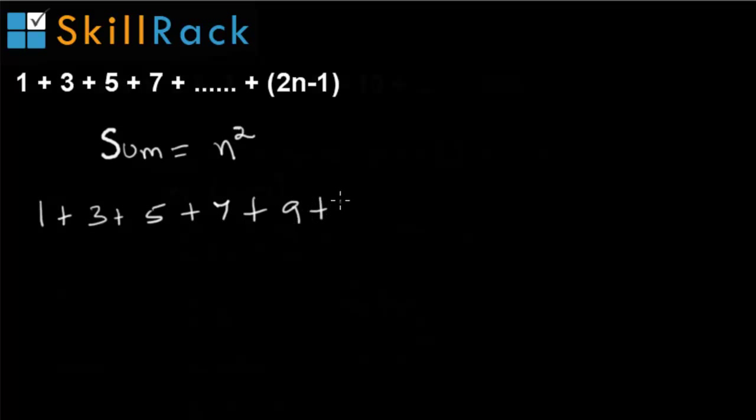Let's take an example. We have 1 plus 3 plus 5 plus 7 plus 9 plus 11. Now 11 has to be written in the format of 2n minus 1. So if 11 has to be written as 2n minus 1, we can write it as 2 into 6 minus 1, that is 12 minus 1.